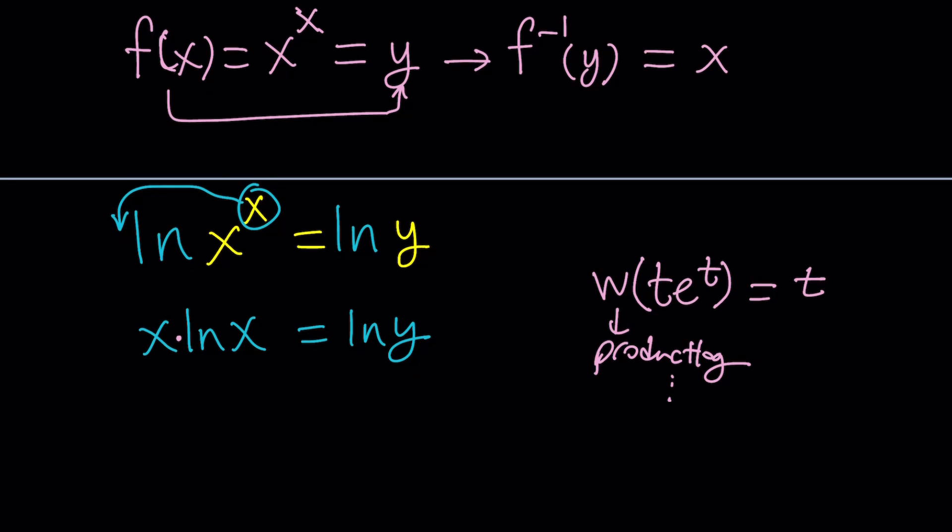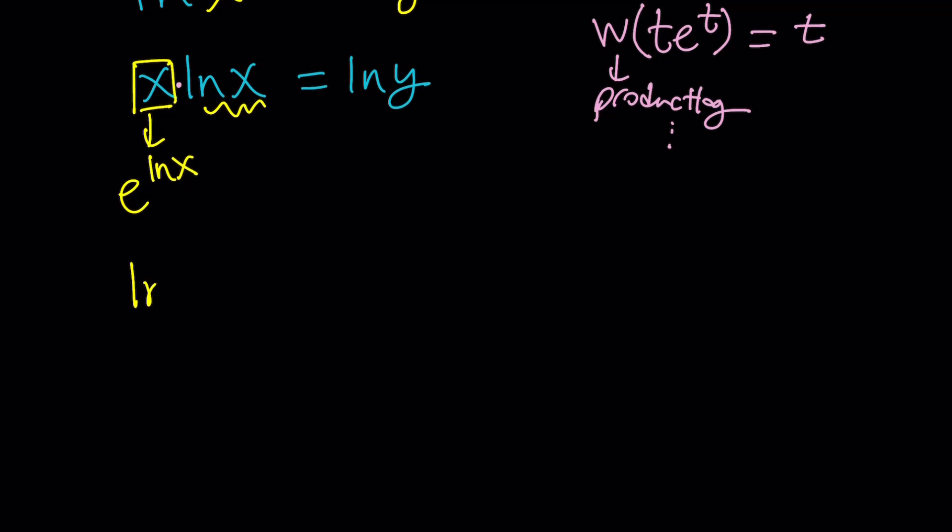So here's what we're going to do, though. We don't have t to the t, so we kind of have to make that. To make it, we're going to go ahead and take this x and write it as e to the power ln x. That makes sense, right? Now, we've got our t. t is going to be ln x. So let's go ahead and write this first. ln x multiply by x, which is e to the power ln x. And then this should equal ln y. Here's a good point for us to apply Lambert's W function because we have t e to the t. Do you see that? This is our t.